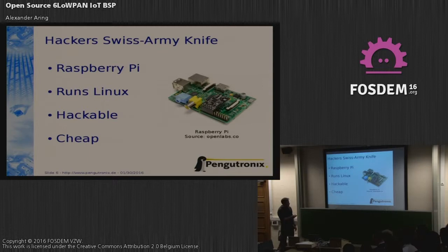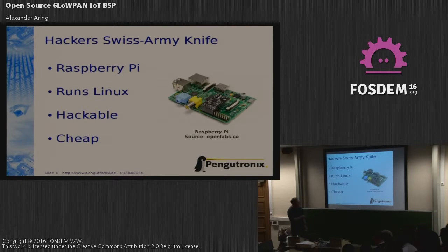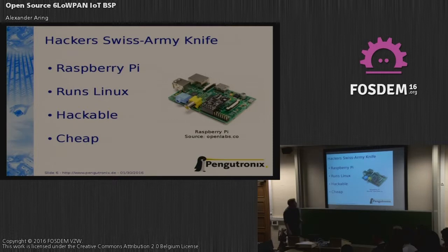Here, for example, this is an 802.15.4 transceiver. You can get this transceiver from OpenLab. It's open hardware, except the transceiver chip itself, but the board itself is open with schematics.